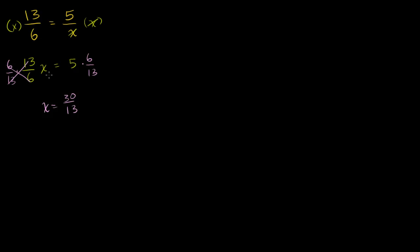Now one way that you might see this done — it's kind of skipping a step — it's called cross-multiplying, where you look at a ratio like this and immediately say the numerator on this side times the denominator on that side equals the numerator on that side times the denominator on this side. So the original problem was 13 over 6 is equal to 5 over x, and someone might immediately go to 13 times x is equal to 5 times 6.